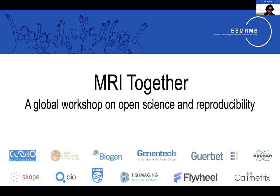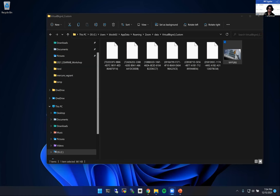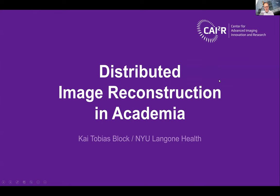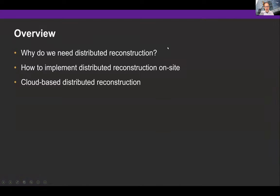Let's get started with our first talk by Tobias Block on decentralized reconstruction in academia. Please use the chat or Q&A if you have any questions and we'll take them at the end of the talk. I changed the title of my talk slightly to 'distributed image reconstruction' because I thought that distributed better describes what I'll be talking about. I want to first discuss why and when you might need distributed image reconstruction, and then in the second part how you can implement it in practice.